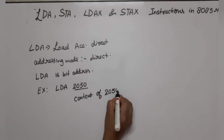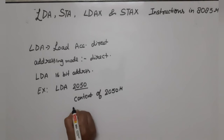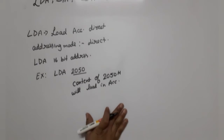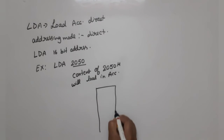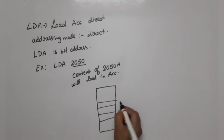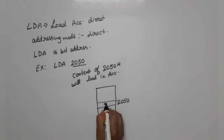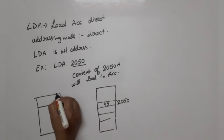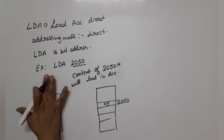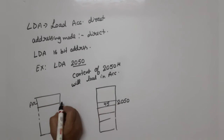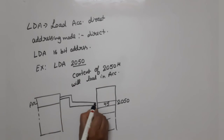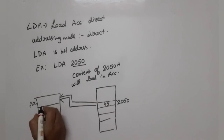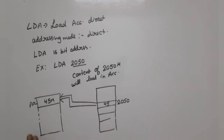The content of the specified location will be loaded into the accumulator. Suppose this is our memory, and this is location 2050H where the data is 45. This is our microprocessor with the accumulator. If this instruction is executed, the data at location 2050H — which is 45 — will be loaded into the accumulator. That is the operation of LDA.